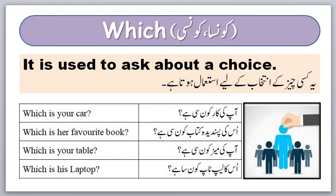Our next word is 'which,' जिसके मीनिंग है कौन सा या कौन से. It is used to ask about a choice. किसी चीज़ के इंतखाब के बारे में बात करने के लिए हम question के start में word 'which' इस्तेमाल करते हैं. For example: Which is your car? आपकी कार कौन सी है? Which is her favorite book? उसकी पसंदीदा किताब कौन सी है? Which is your table? आपकी मेज़ कौन सी है? Which is his laptop? उसका laptop कौन सा है?